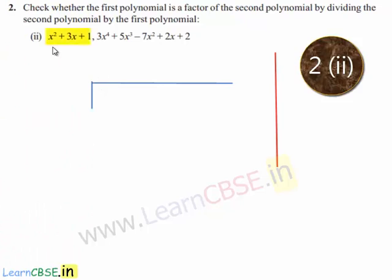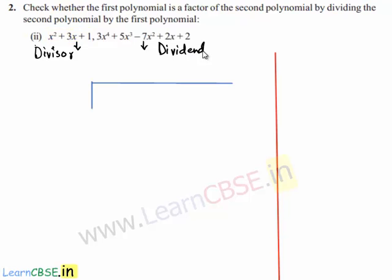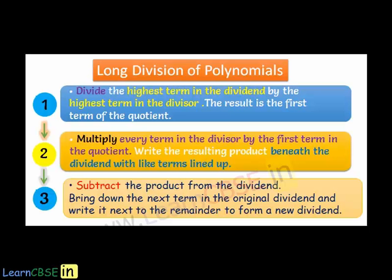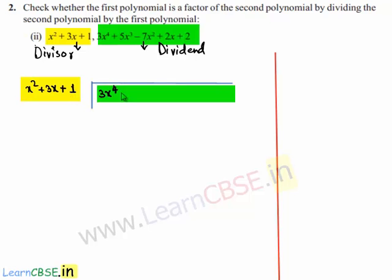Now the second part: the first polynomial given is x² plus 3x plus 1 and the second polynomial is 3x⁴ plus 5x³ minus 7x² plus 2x plus 2. Since we need to divide the second polynomial by the first, the divisor is x² plus 3x plus 1 and the dividend is 3x⁴ plus 5x³ minus 7x² plus 2x plus 2.